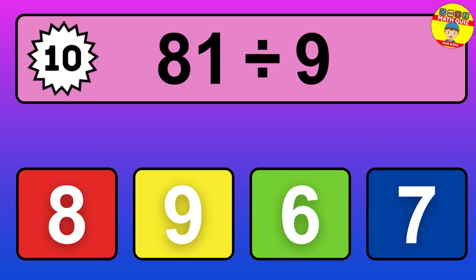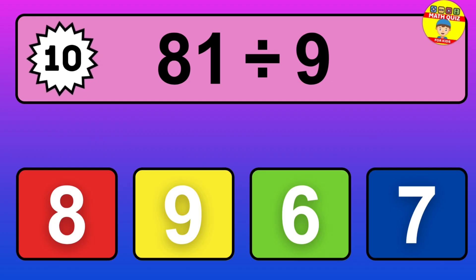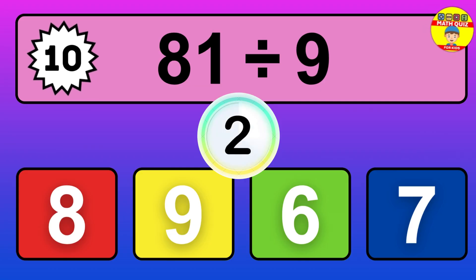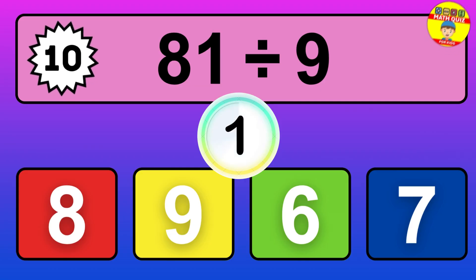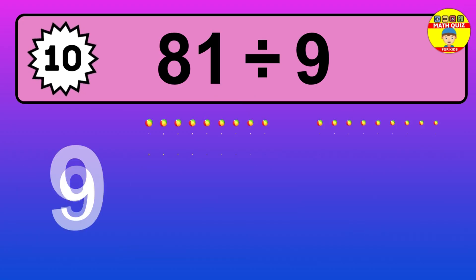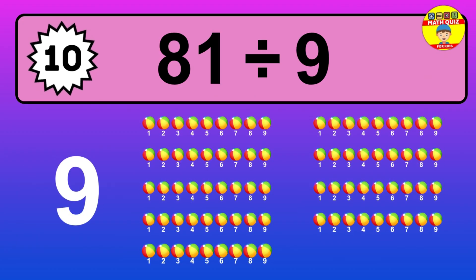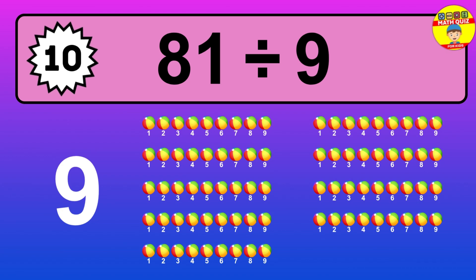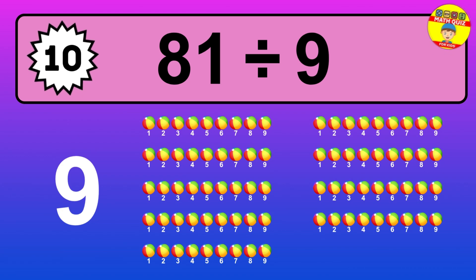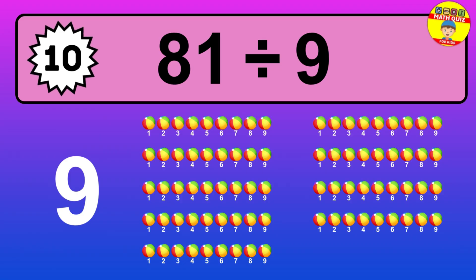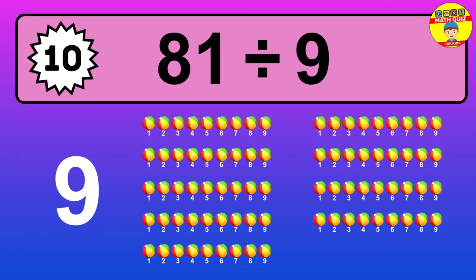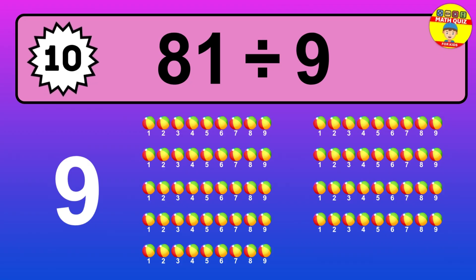81 divided by 9 — it's time to think. Let's go to the solution. Divide the number 81 by 9. Each group contains 9 units, so dividing 81 by 9 results in 9 equal groups. Thus, the result is 81 divided by 9 equals 9.